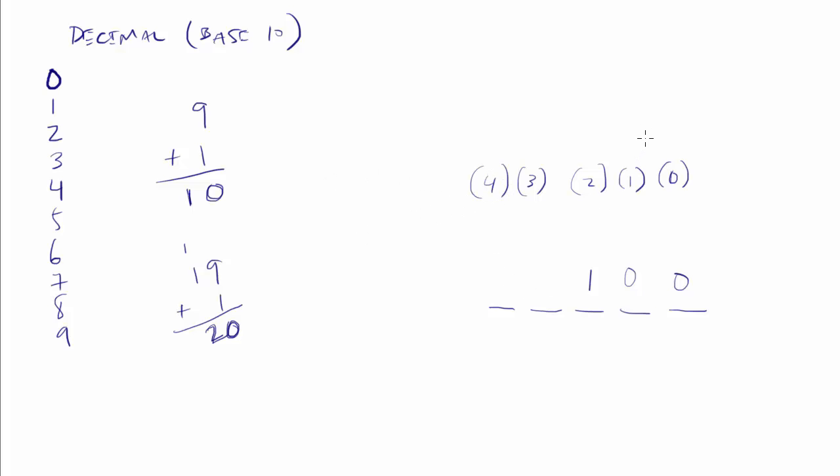We just keep getting bigger and bigger. And we're in the base 10 numbering system, so if I take the base 10 to the power of that position, then that gives me the value of any digit in this position.